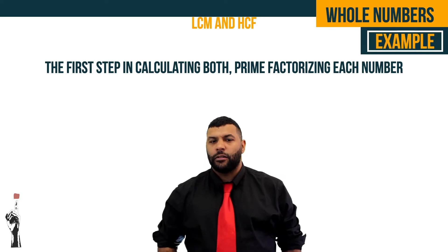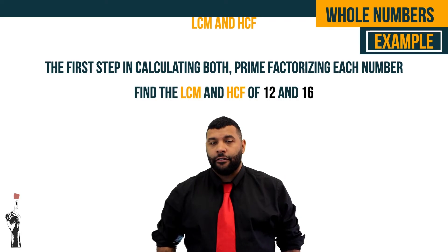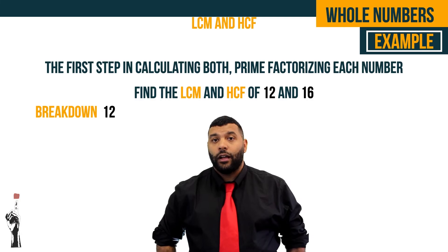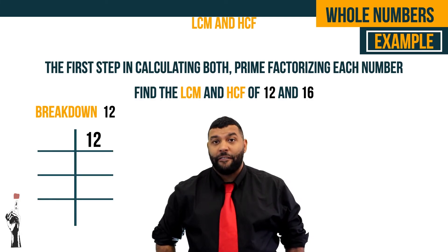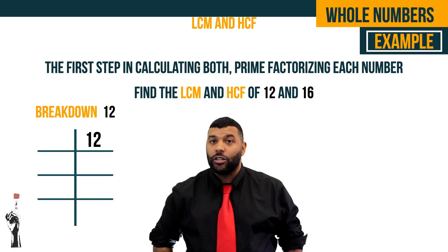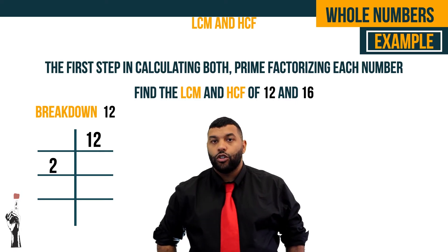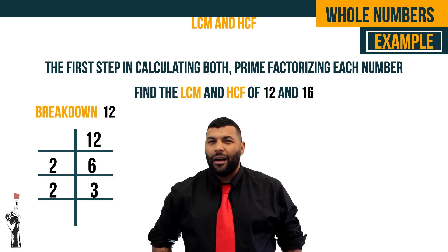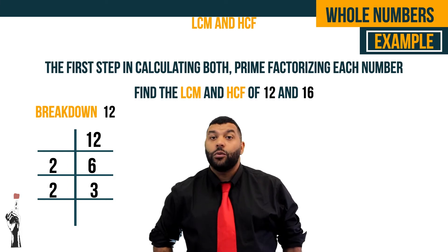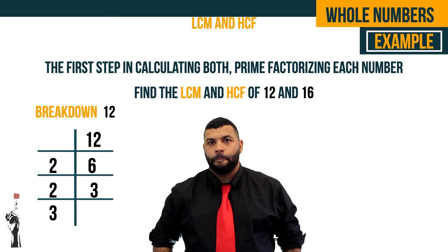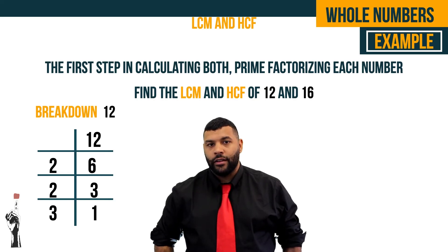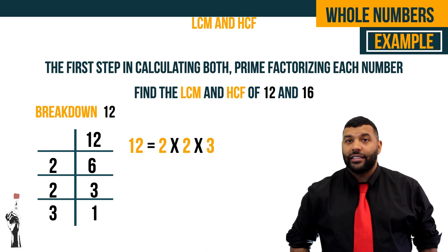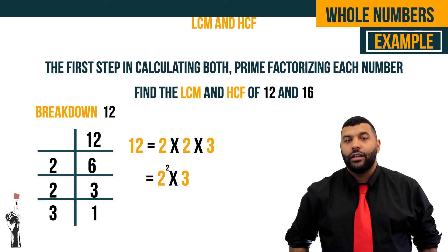So let's start off with a simple example. Find the LCM and HCF of 12 and 16. We break down 12 first by placing it in our ladder. We divide 12 by the smallest prime number, 2, to get 6. We divide 6 by 2 to give us 3. 3 cannot be divided by 2, so we move on to 3. 3 divided by 3 gives us 1. So 12 breaks down to 2 times 2 times 3, or 2 to the power of 2 times 3.